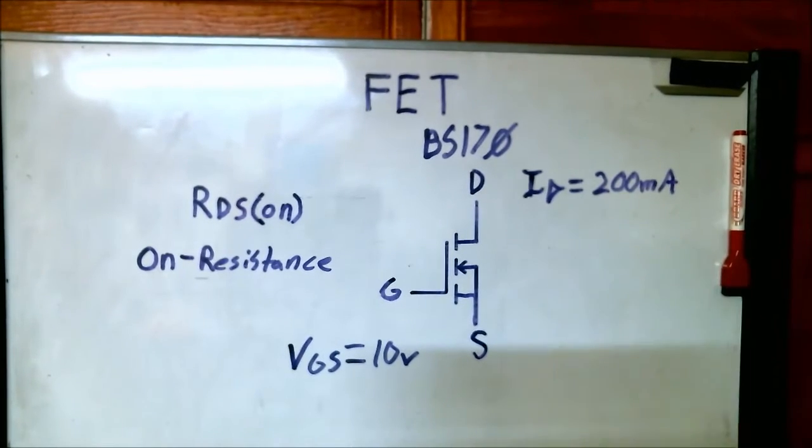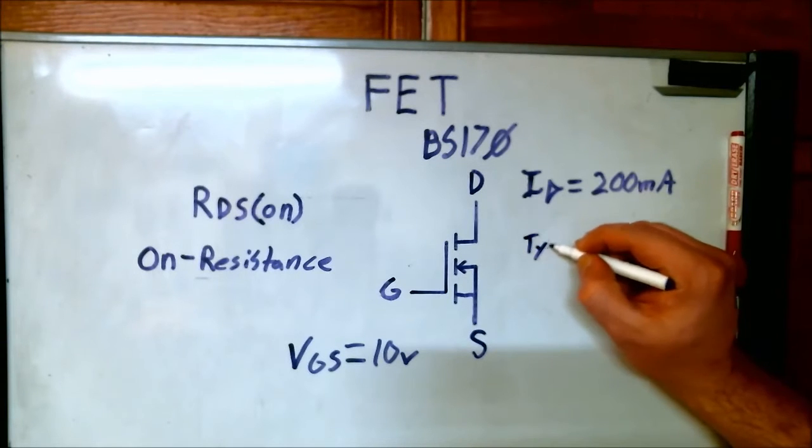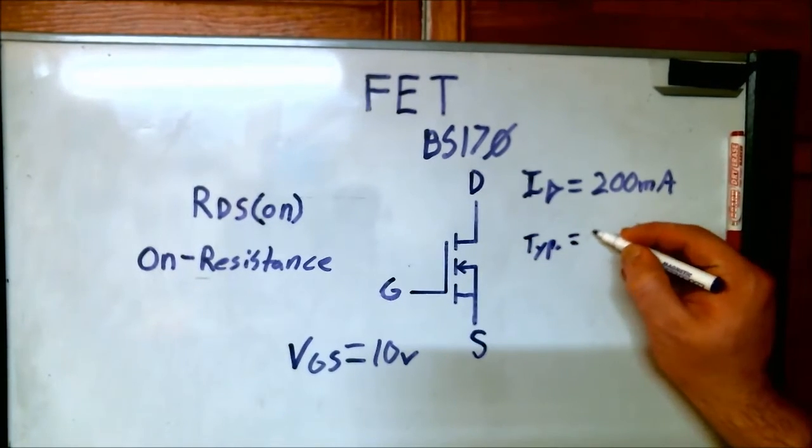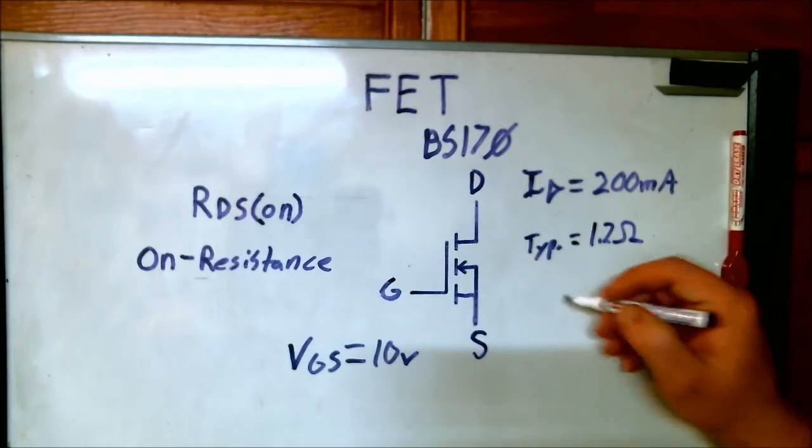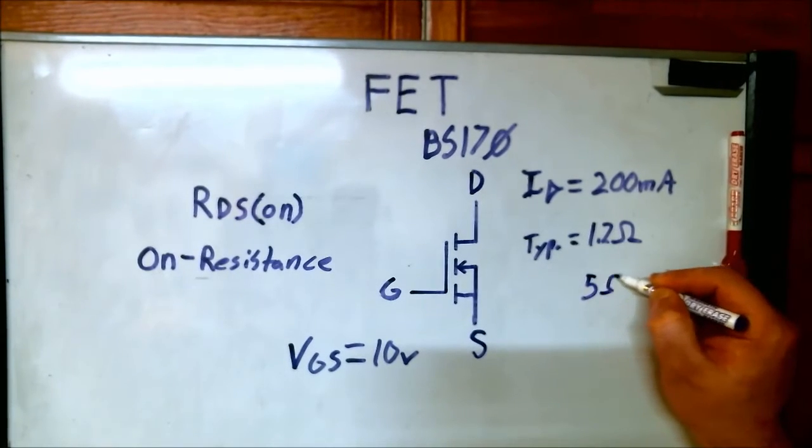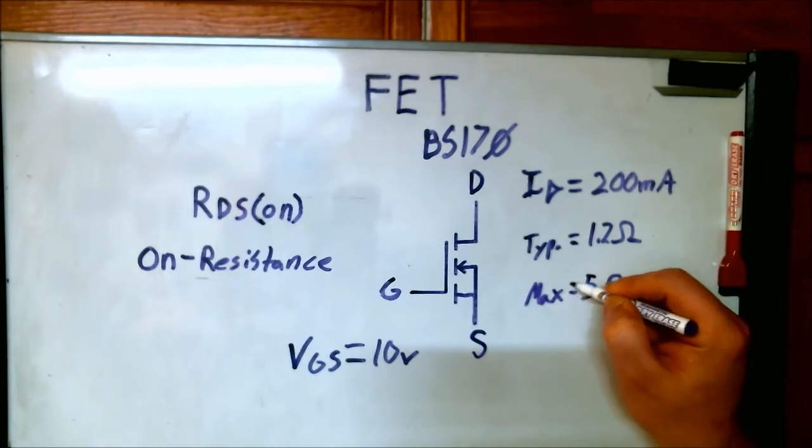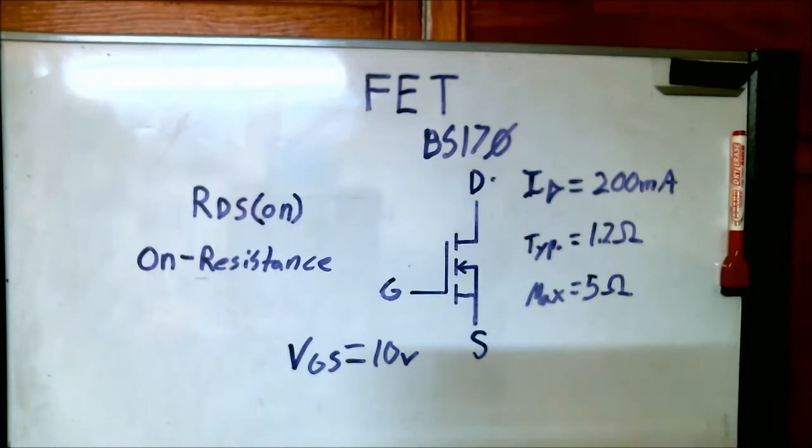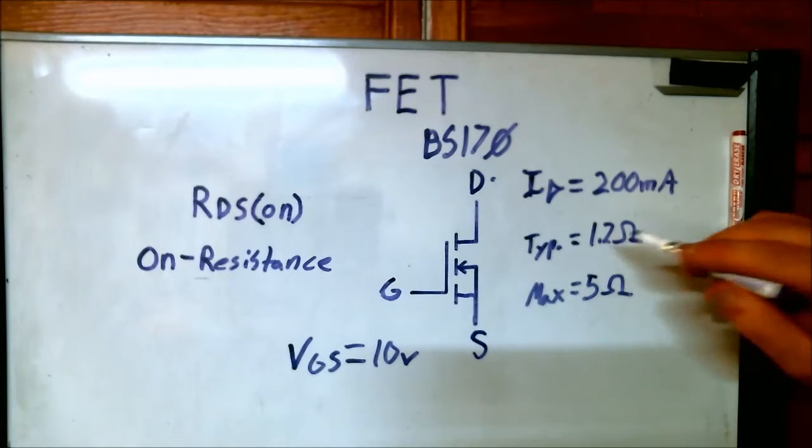With those configurations, they state you will typically get 1.2 ohms, and the maximum would be 5 ohms. That's the maximum resistance you would see between the drain and the source.